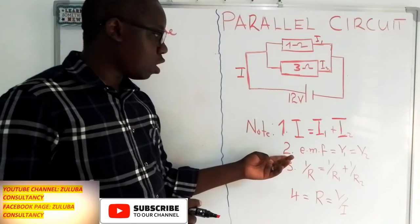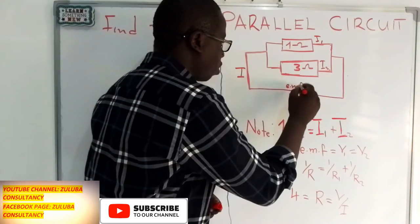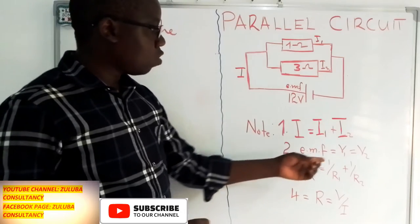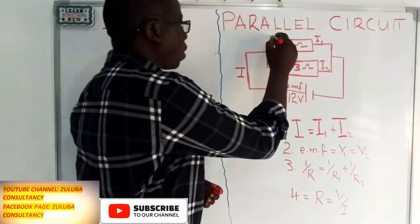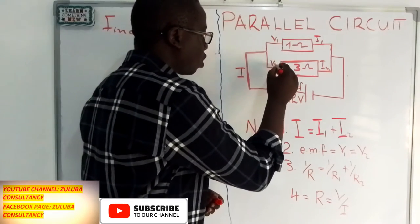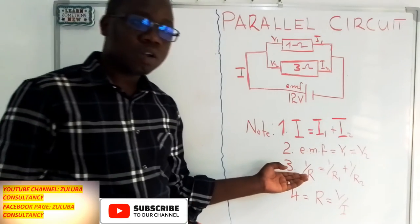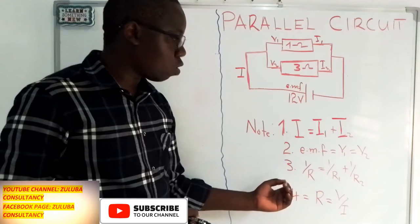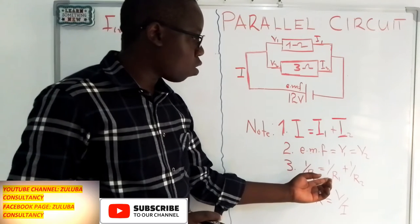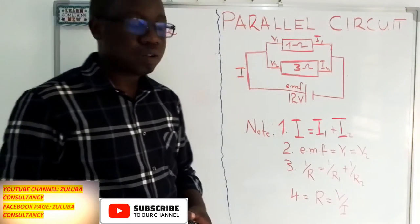The second point is the EMF, which is the electromotive force or the potential difference on the cell, is equal to the voltage passing in the first resistance, which is again equal to the voltage passing in the second resistance. The third point is the reciprocal of the total resistance is equal to the reciprocal of the first resistance plus the reciprocal of the second resistance.